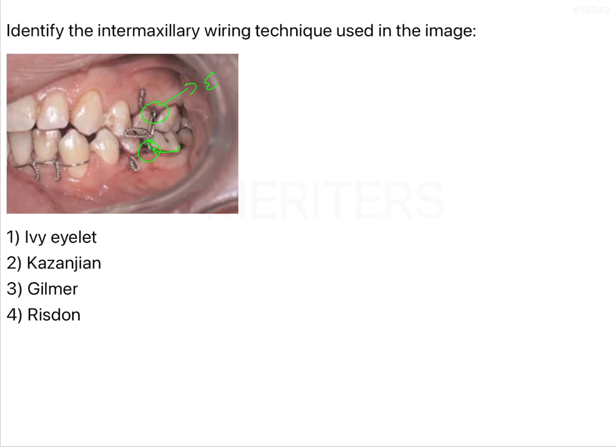So there are eyelets, one observation. Second observation: from the distal side there are threaded wires which have been threaded in these eyelets, and then these two eyelets have been secured by vertical or we can say straight ligature wires. So that is the kind of intermaxillary wiring technique which we have seen here.